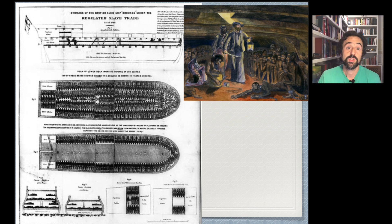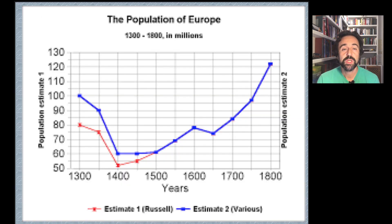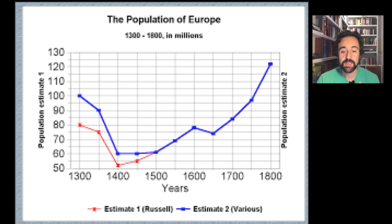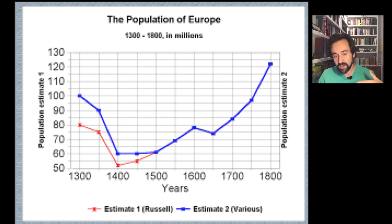So thanks to this trade, the population in Europe grew up, and grew up very quickly. You can see that graphic: from the 15th century, the population is more or less stable, and since the beginning of the 16th century it has started growing. The biggest growth happened between the 18th and the 19th century, and we will see later how it kept increasing.